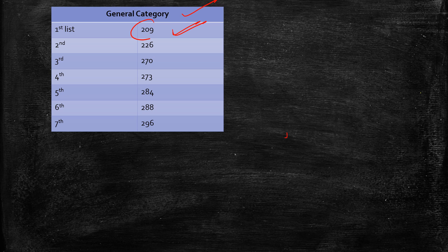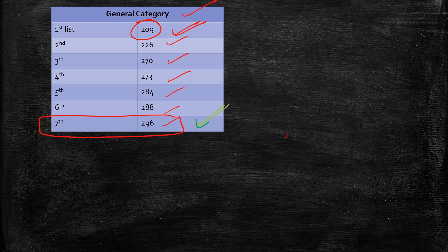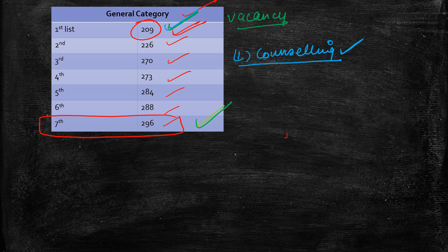In the General category last year, the first list had rank 209 as the last rank. After that there were many more lists — sometimes one vacancy, sometimes two, sometimes three. The seventh and last list had rank 296 being offered admission. The list is vacancy-based — in the first list, candidates up to rank 209 were invited for counseling.